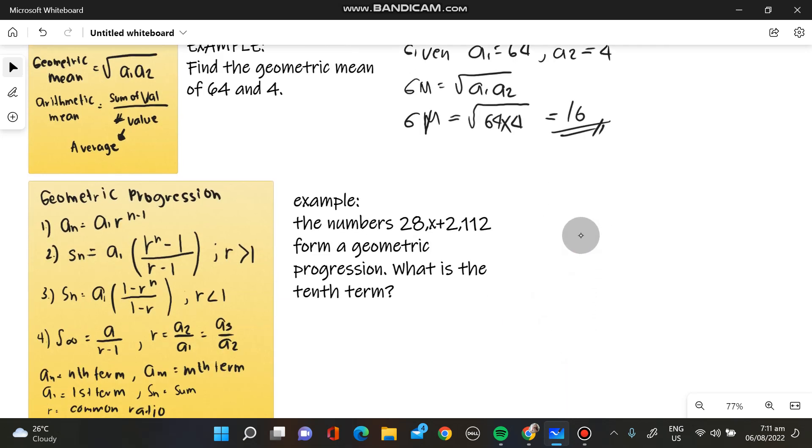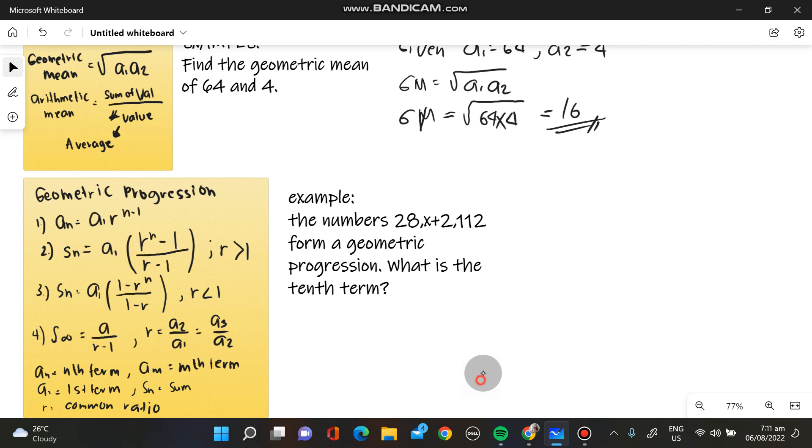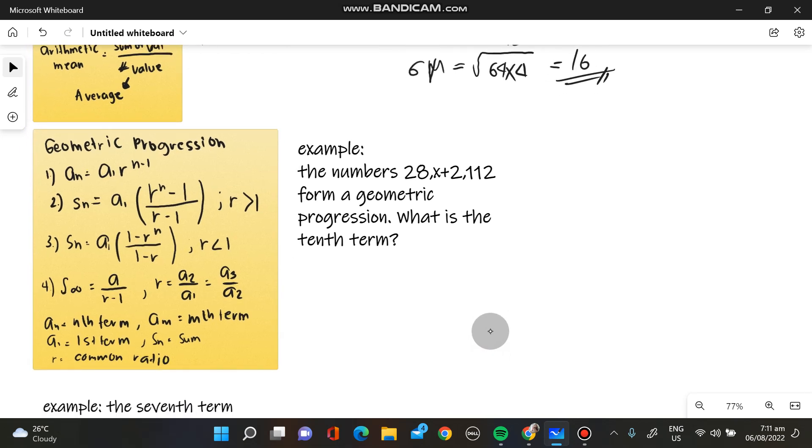And the next one is the geometric progression. So we have many formulas noted here. We have geometric progression number 1 formula, A sub n is equivalent to A sub 1, R raised to n minus 1, over R minus 1, wherein R is greater than 1.